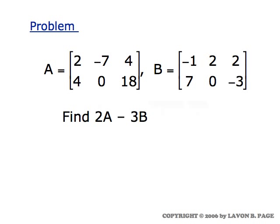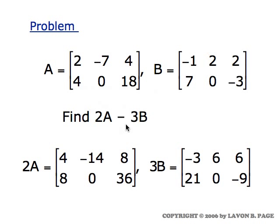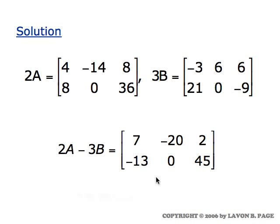Let's do this problem which involves a couple of operations. We have two matrices A and B, each of them has two rows and three columns, and we're asked to determine the expression two times A minus three times B. So we're going to multiply each of these matrices times a number and then combine them. You can think of first computing two times A by multiplying each entry of A times two, then multiplying each entry of B times three to get three B, and then subtracting those two matrices.